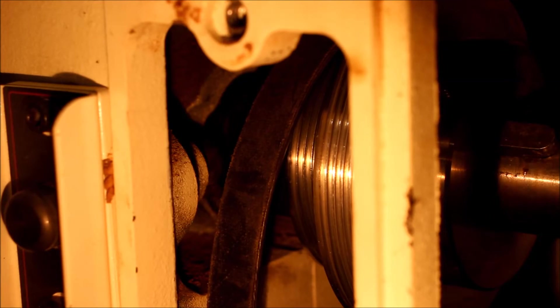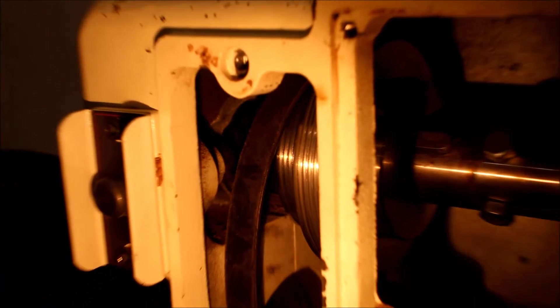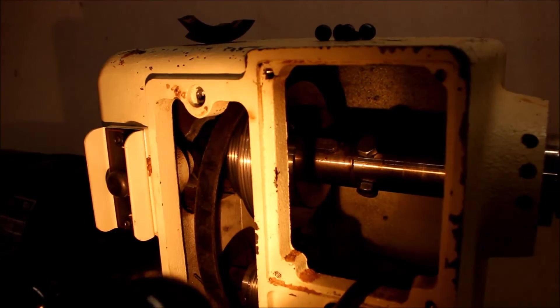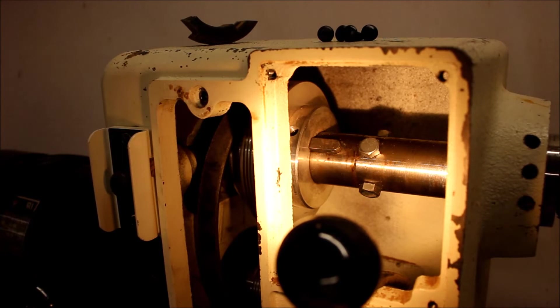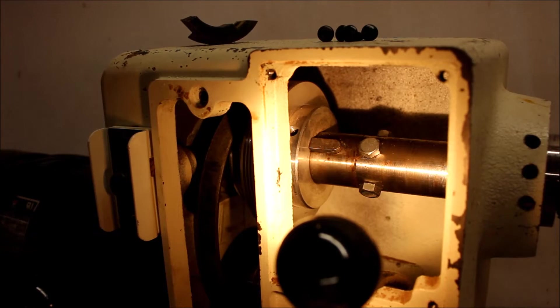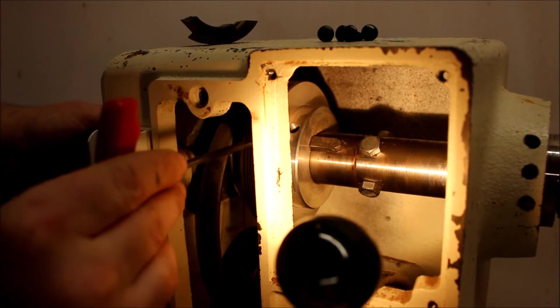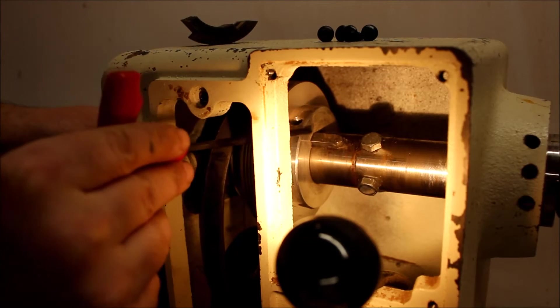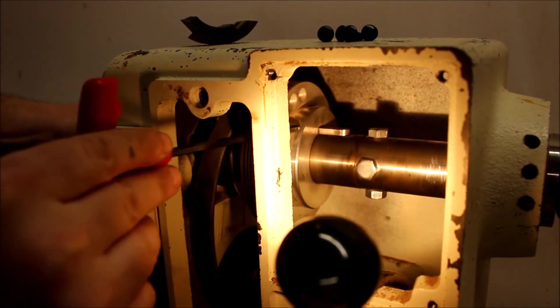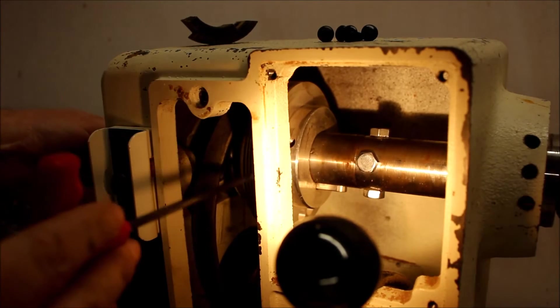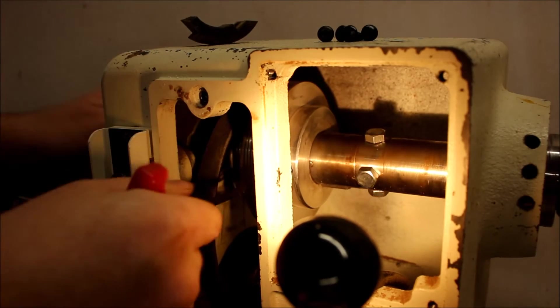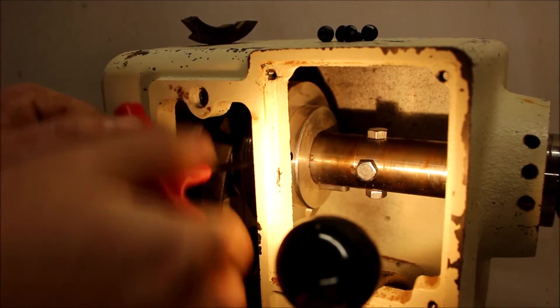And hopefully we don't have to replace the whole spindle. So we'll keep going with our disassembly here. We're going to go ahead and take off the pulley. You can see there's a set screw right here where our keyway is, and then there's another one 90 degrees after it. So we'll go ahead and take these and loosen them.